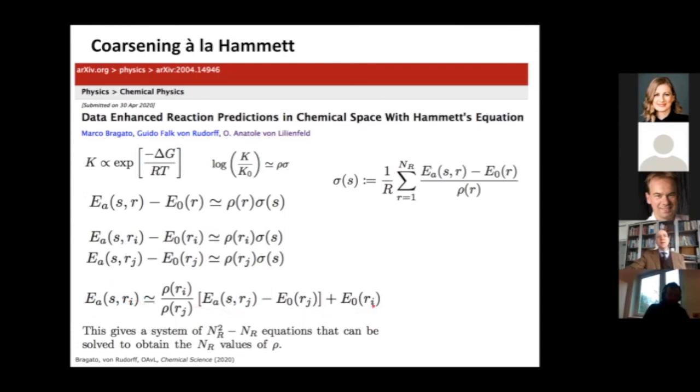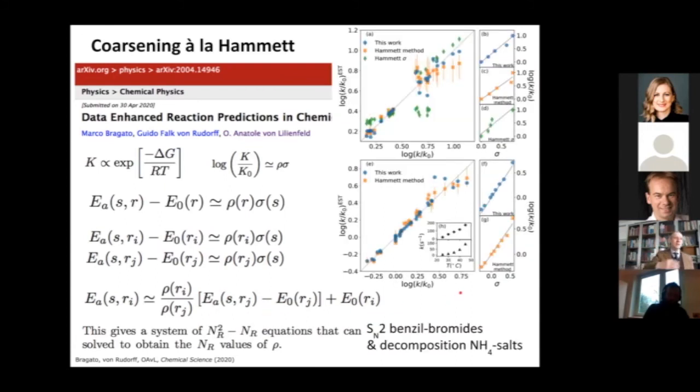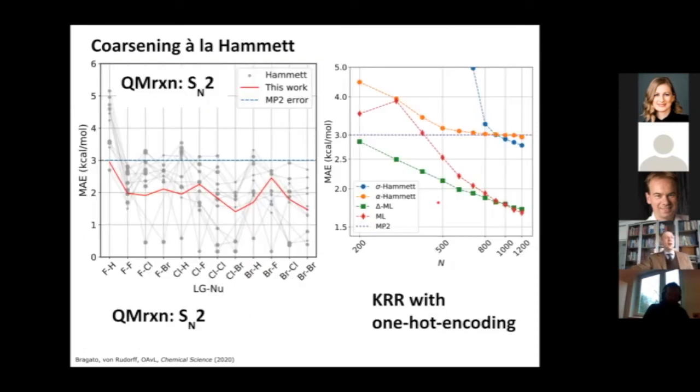The Hammett equation relates or postulates the relationship between the free energy difference and the equilibrium constant to a product of two factors. Rho stands for the reaction types, in our case elimination or substitution. The other factor sigma typically stands for the chemical composition. We wanted to see if this simple ansatz also performs for this dataset. You can build a system of equations and optimize, treat the sigmas as regression coefficients. Like this you can even out the noise.